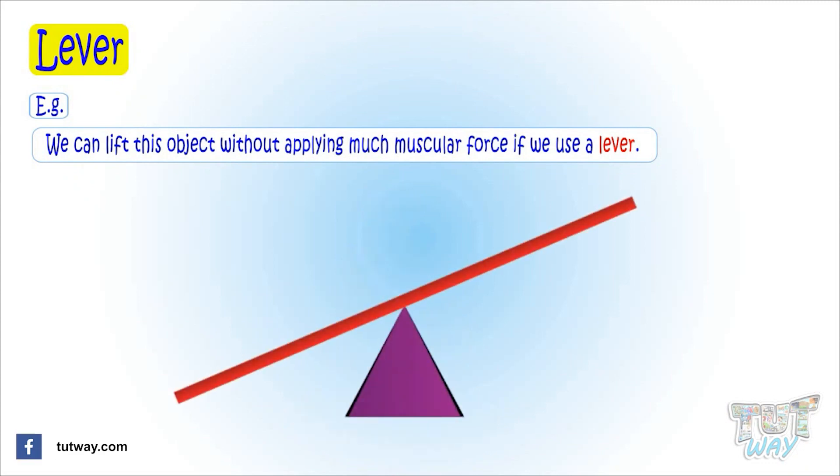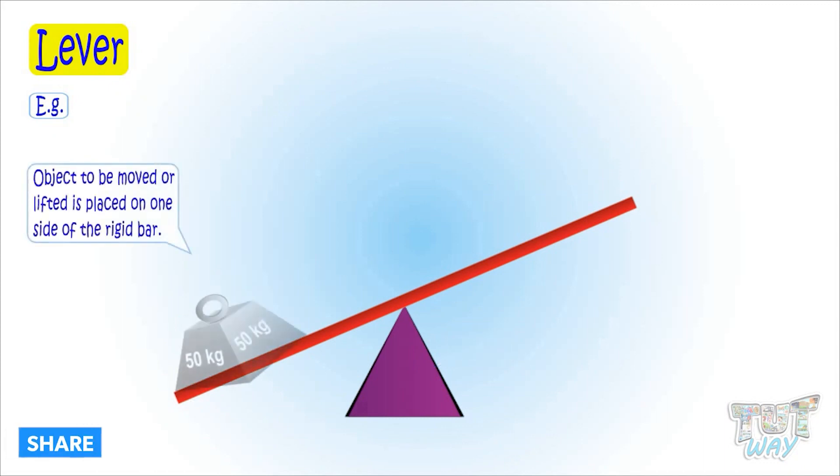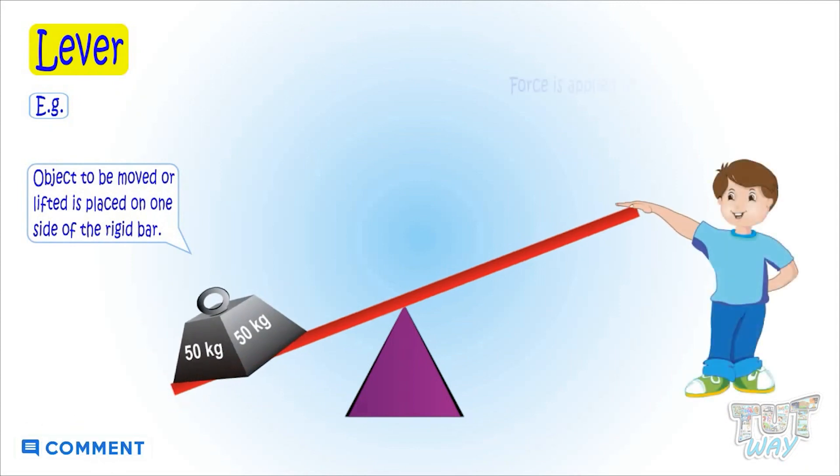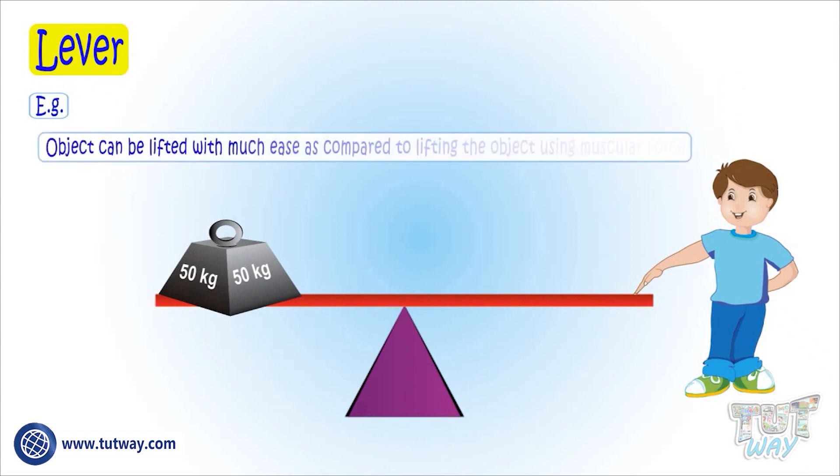Which is nothing but a rigid bar that moves around a fixed support called fulcrum. Object to be moved or lifted is placed on one side of the rigid bar and force is applied on the other side of the bar to lift it. Object can be lifted with much ease compared to lifting the object using muscular force.